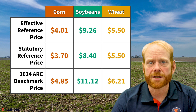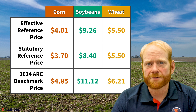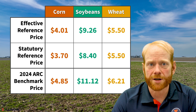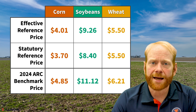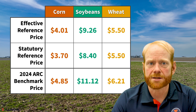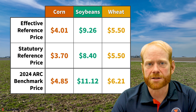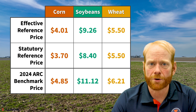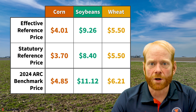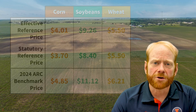And wheat's ARC benchmark is up to $6.21 per bushel. The increased effective reference prices for corn and soybeans, the higher ARC benchmark prices for all three crops, and expectations for lower marketing year average prices over the 2024 marketing year suggest higher likelihoods of triggering payments from both programs compared to recent years when actual prices have been well above reference and benchmark levels.